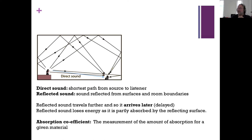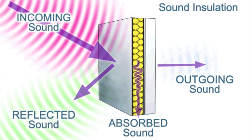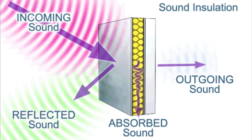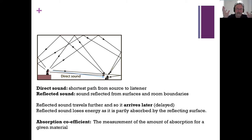Reflected sound loses a bit of energy when it hits a surface, and the amount of energy lost depends on the nature of that surface. If a sound hits a hard surface like concrete or glass — something acoustically reflective — it loses minimal energy. Whereas if it hits an absorptive surface like dense foam, thick carpet, or furniture, it loses a lot more energy before it comes back out again.